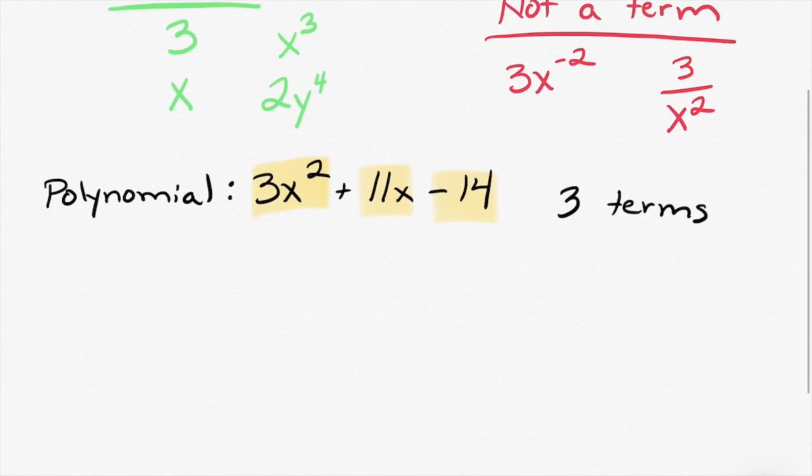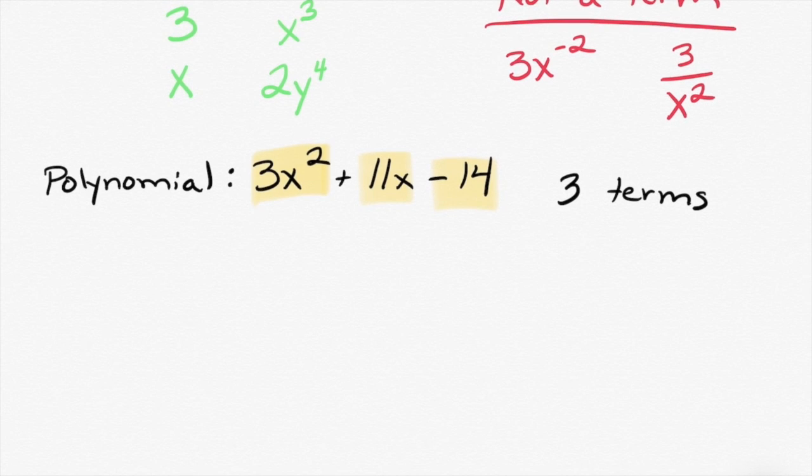Okay, what about this? It has two terms. Very good. What are they? Seven y's with its power and minus nine.